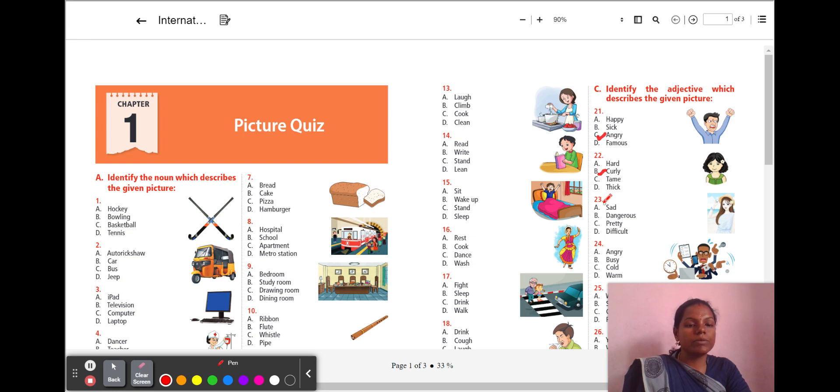Next, 22nd question. Look at this girl. How does she look? She is hot, curly, tame, thick. Look at her hair. It is curly. So, the right adjective word for the picture is curly. Next, move to the 23rd question. Again, one girl is there. How does she look? She looks very beautiful, right? So, what is the adjective word that suits this picture? A, sad. B, dangerous. C, pretty. D, difficult. So, she looks very beautiful. Another synonym word of beautiful is pretty. So, C, pretty.